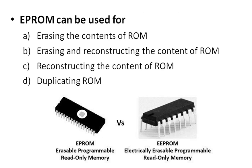The next question is: EPROM can be used for? The options are: A) Erasing the content of ROM, B) Erasing and reconstructing the content of ROM, C) Reconstructing the content of ROM, and D) Duplicating ROM. The right answer is B — erasing and reconstructing the content of ROM. EPROM stands for Erasable Programmable Read-Only Memory, and it is part of main memory.